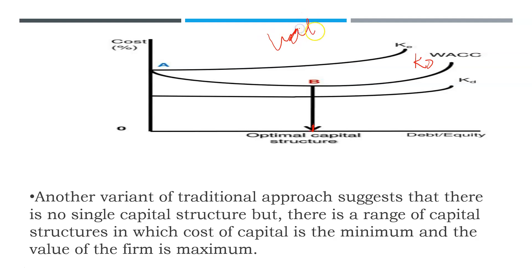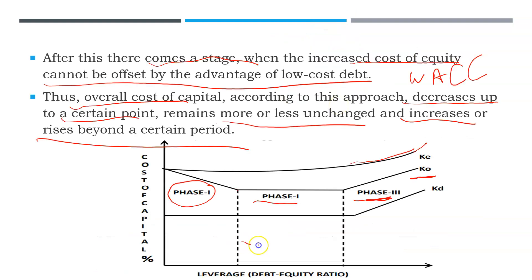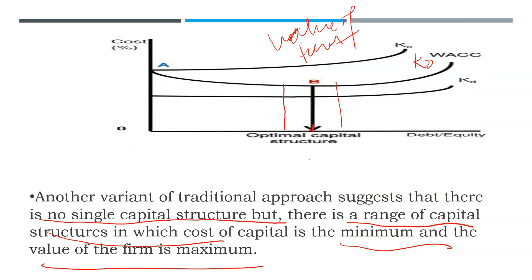At this optimum level, the value of the firm will be maximum. There is also a variant of this theory which says there is no single optimum capital structure, but rather a range of capital structures in which cost of capital is minimum and value of firm is maximum. In the phase where WACC is constant, all capital structure mixtures in that range will maximize the value of the firm, so rather than one optimum structure, there is a range of optimum capital structures.